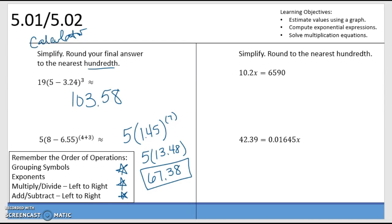Solving a simple equation. Divide, using your inverse operation. So, 6590 divided by 10.2. I come out with x to be 646.08.